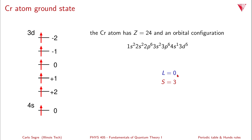Summing all m_l values: the 4s gives 0, and the 3d gives +2, +1, 0, -1, -2 which all cancel, so L=0. But S=3 because all six electrons are spin-up, maximizing the multiplicity. Since the shells are exactly half-filled, j = L+S = L-S = 3. The term symbol is 7S3, with L=0 (S state), multiplicity 7, and j=3.